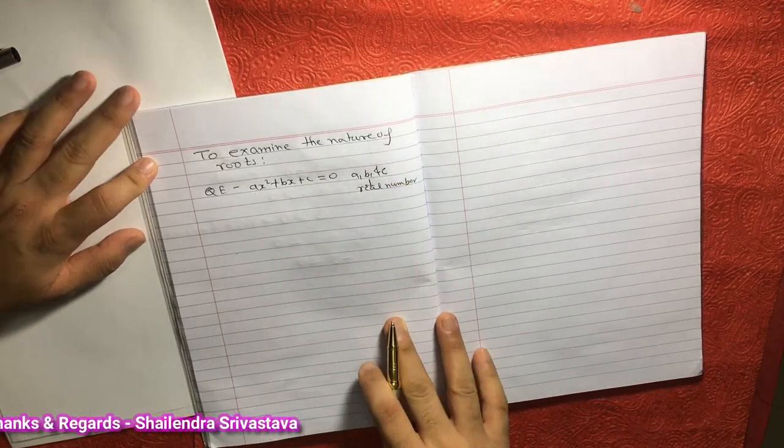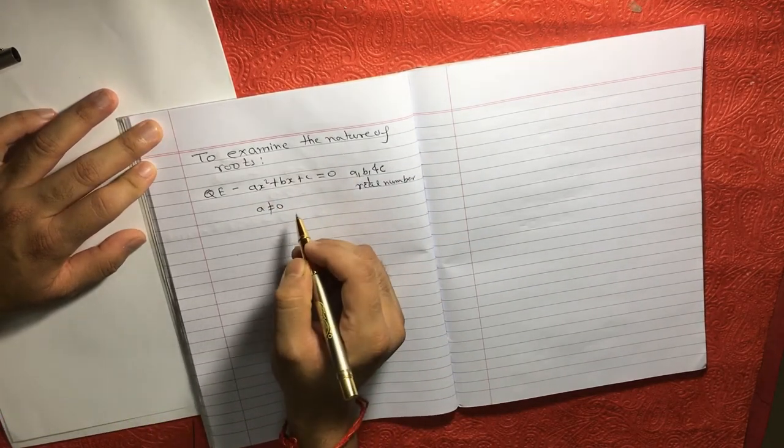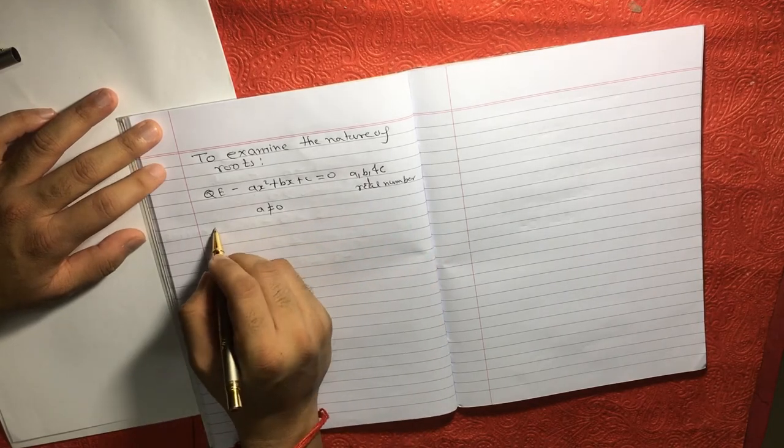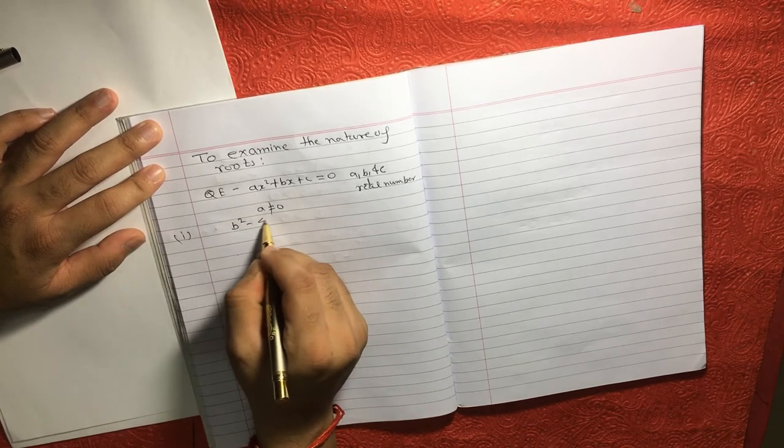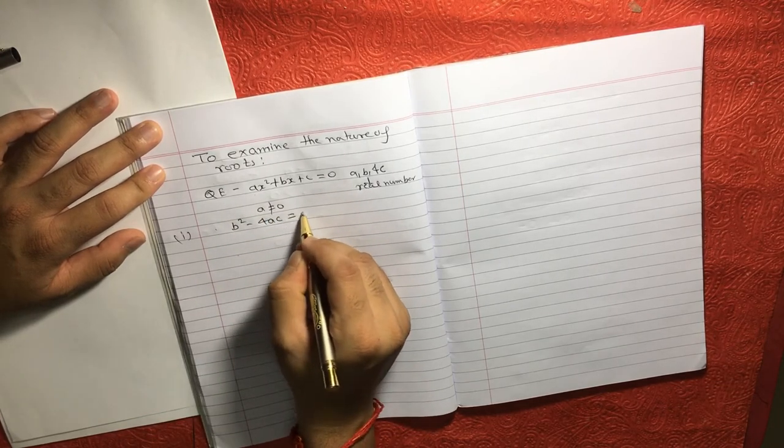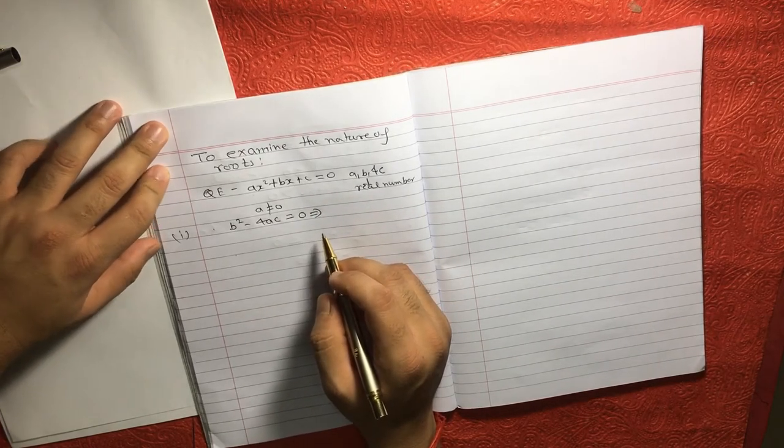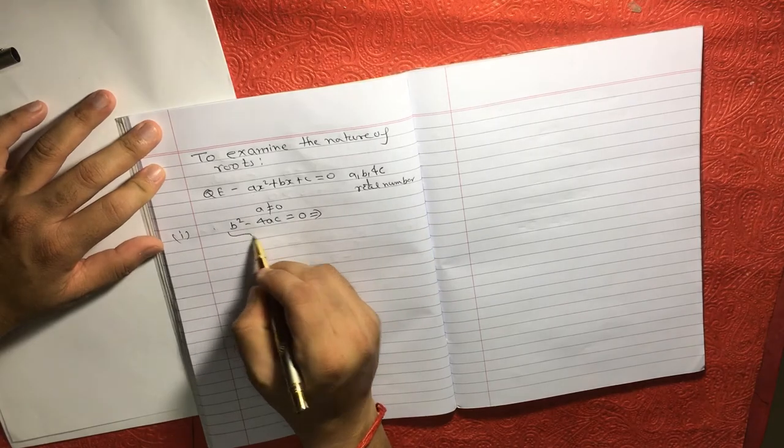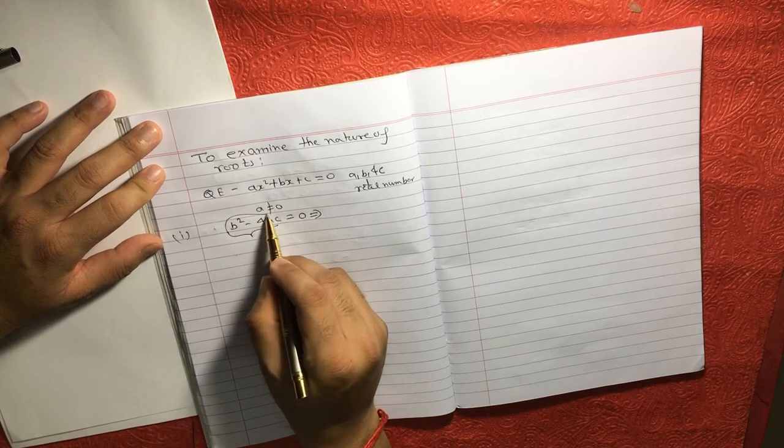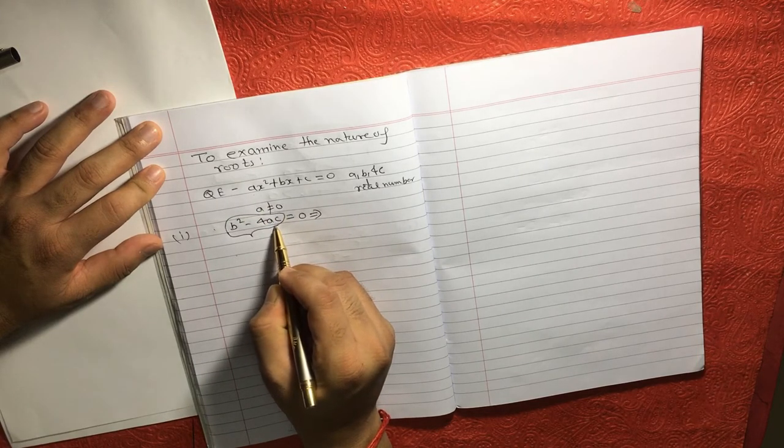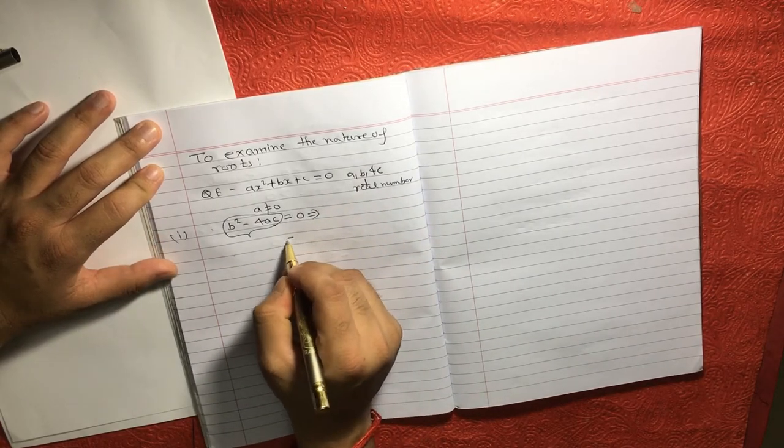And also, A is not equal to 0. Then, as I explained, we have a formula B square minus 4AC is equal to 0. Now, the concept here is, if after solving this equation, the concept is after solving this equation B square minus 4AC, if the result is equal to 0,